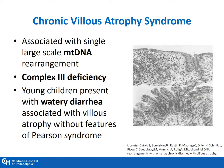Chronic villous atrophy syndrome is similar to Pearson syndrome in that it presents with diarrhea in infancy. It is secondary to a complex 3 deficiency. Unlike Pearson syndrome, it does not have pancreatic exocrine insufficiency, and that is the hallmark distinction between these two disorders.